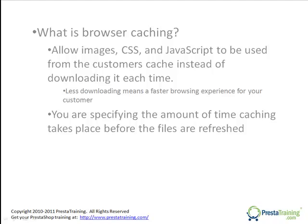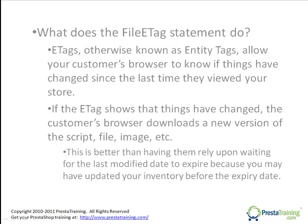Let's go on to one more item that affects browser caching — it's called eTags. There is an eTag file statement we'll be looking at when we actually get into setting up the caching option. eTags are otherwise known as entity tags. Most of the time when an item is refreshed in your customer's cache it's because it has expired and it thinks it should go get a new version. But eTags allow your customer's browser to know if things have changed since the last time they viewed your store, so if you've changed something before the cache expires, an eTag can tell the customer's computer that there's been an alteration and it needs to get a revised version of that file or image right now.